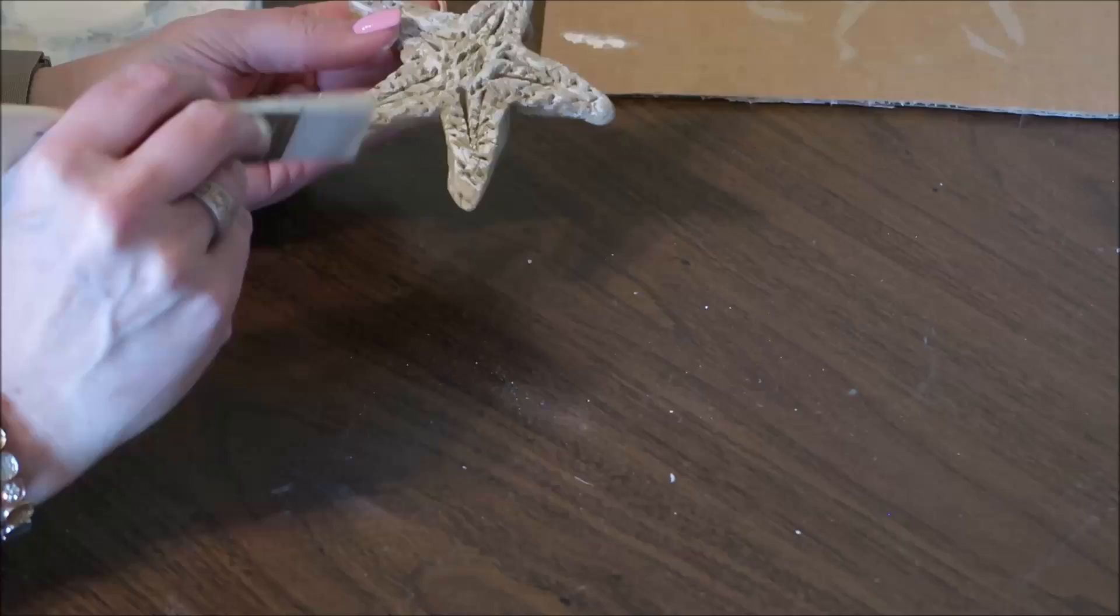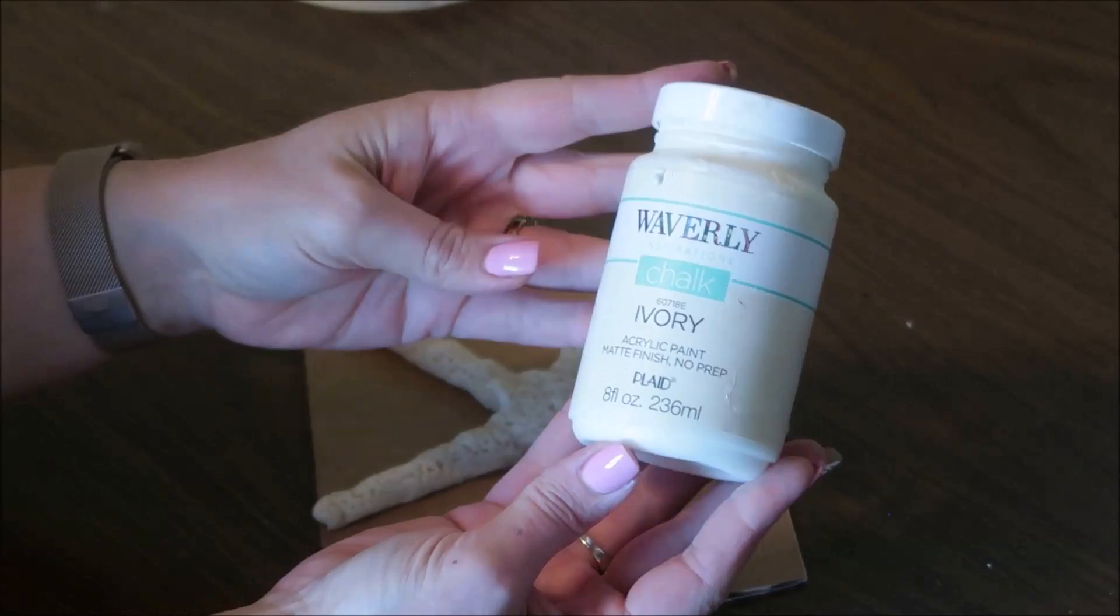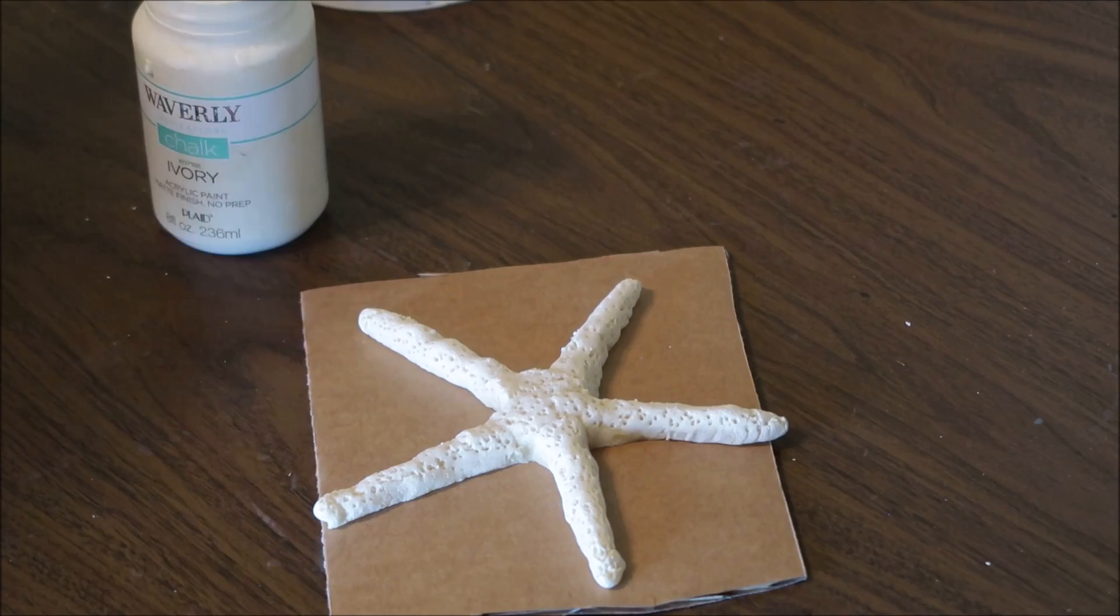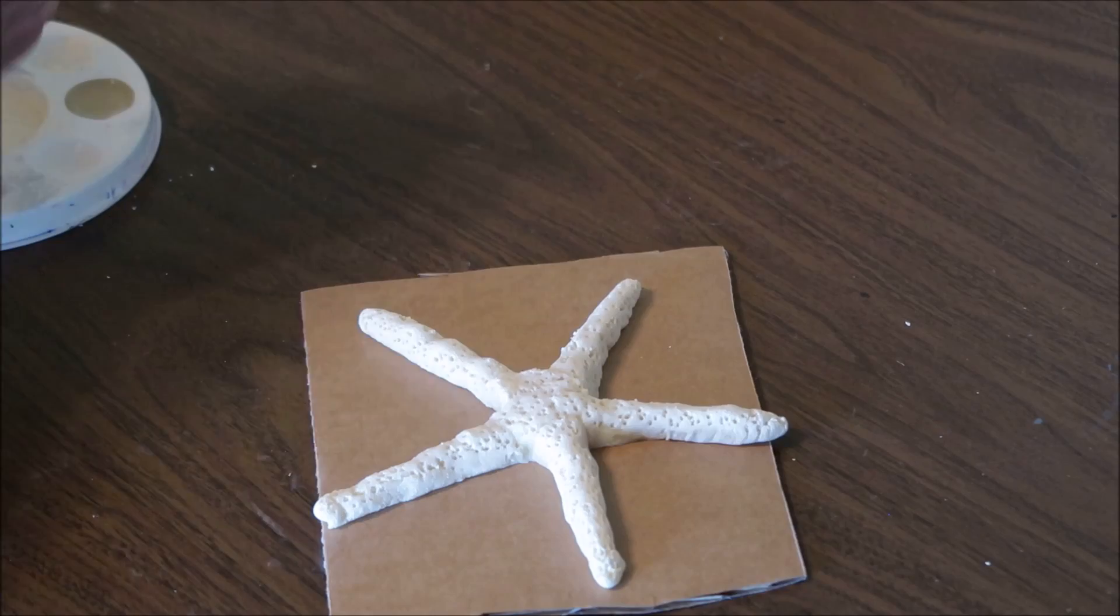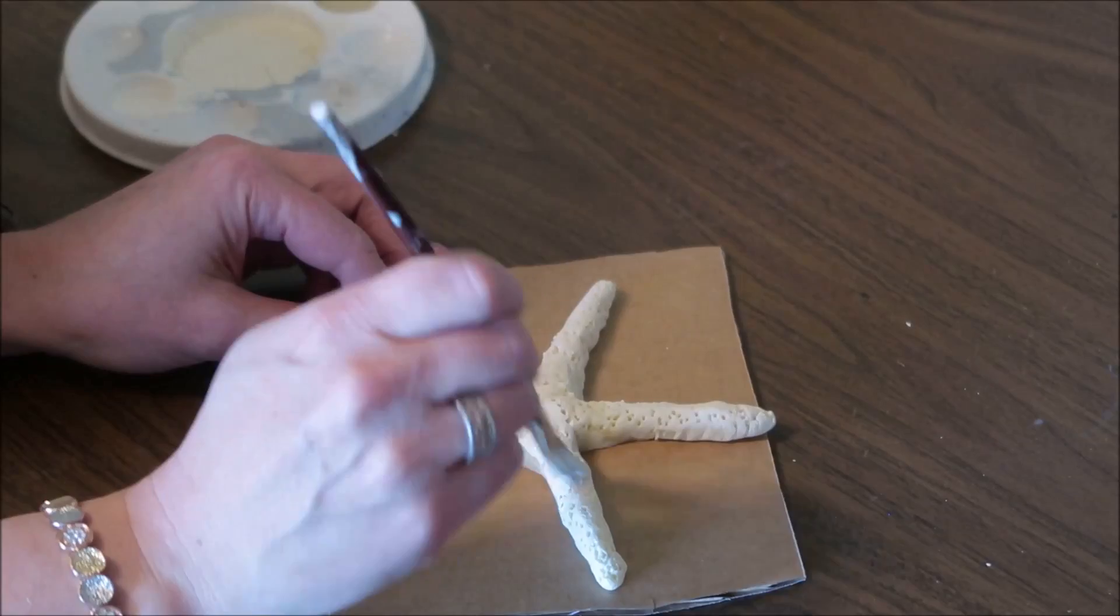For the finger starfish, all I'm going to do is paint it with the Waverly chalk paint in the color ivory. All of the finger starfish that I saw pictures of, they were just like a pure white. And so this was really easy. I did water the paint down a little bit. And I didn't worry about getting it down into the holes. I liked the way that looked better to actually have it not go down into the holes.